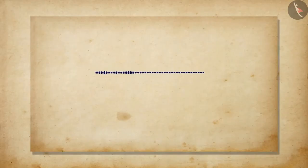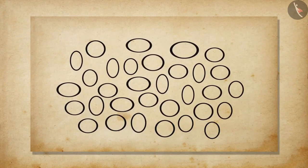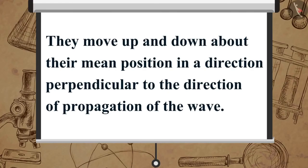There exists another type of wave, known as transverse wave. The particles in a transverse wave do not move back and forth. But they move up and down about the mean position, in a direction perpendicular to the direction of propagation of the wave.